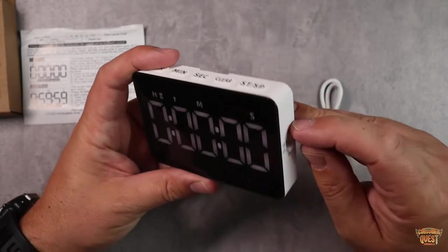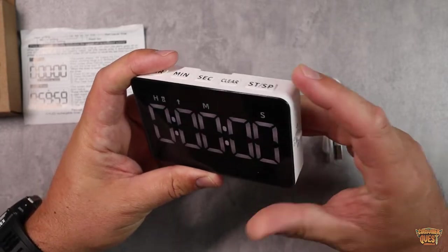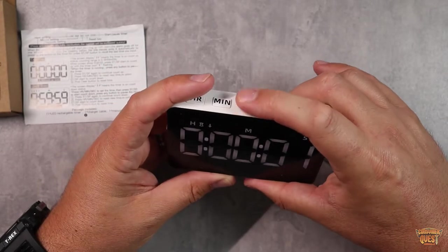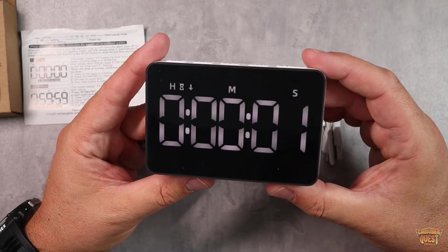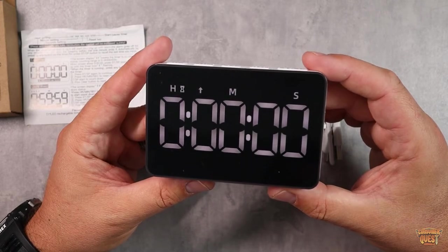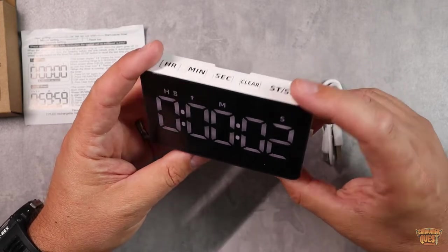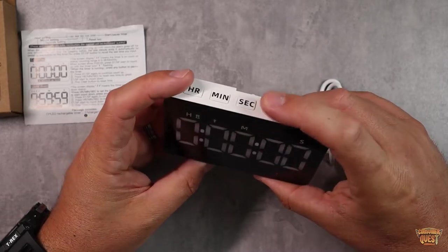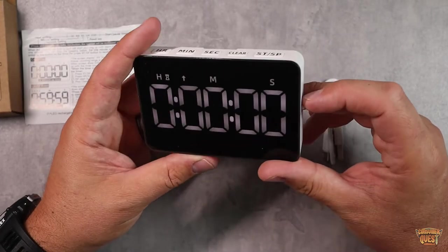I'm going to clear that. We'll put it up to volume level one. A couple more seconds here. Hit start. And there's your alarm. So that is the lowest volume setting. It gets very loud. You can have this extremely loud.